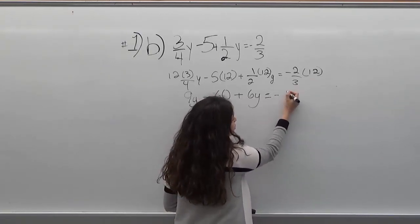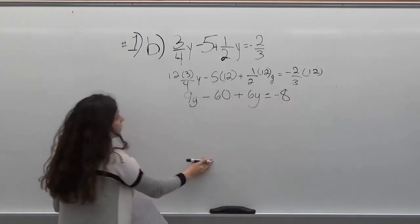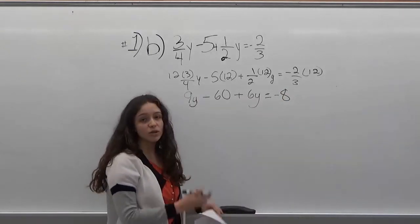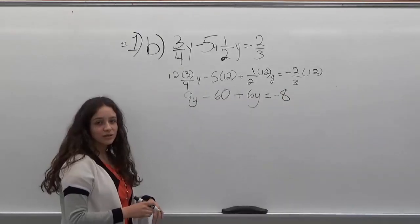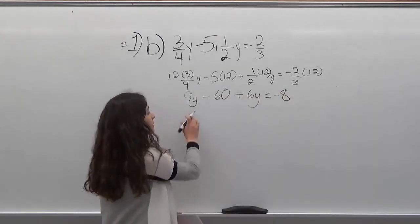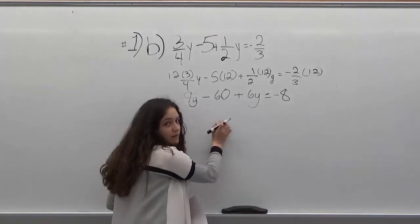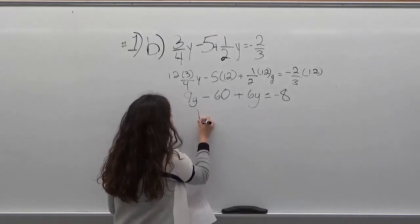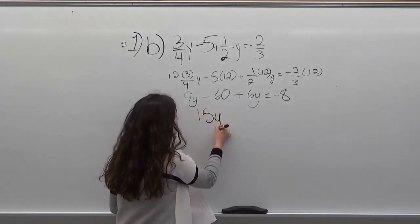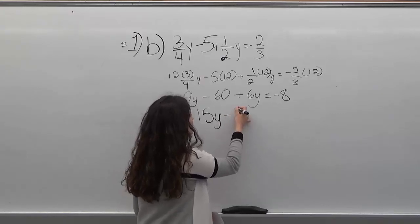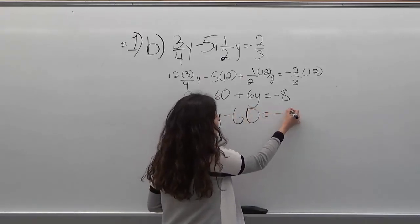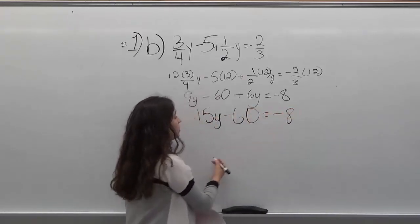Now your equation is much simpler to solve. You can start by combining like terms: 9y plus 6y which is 15y, so 15y minus 60 equals minus 8.